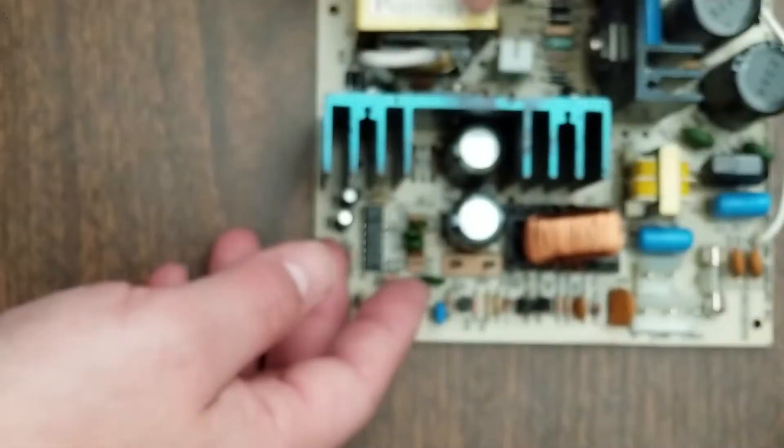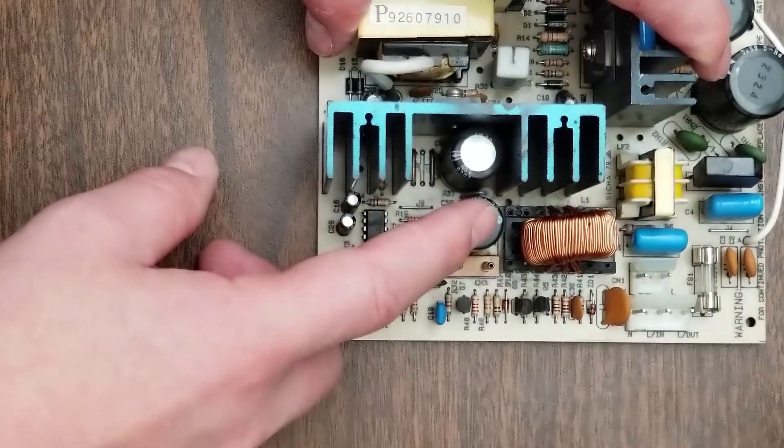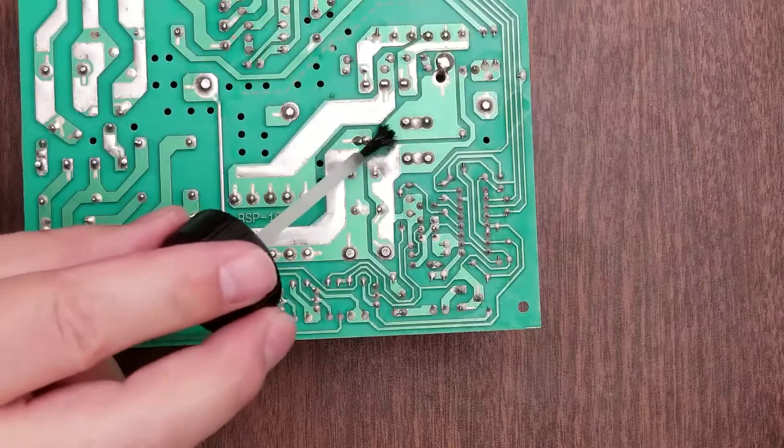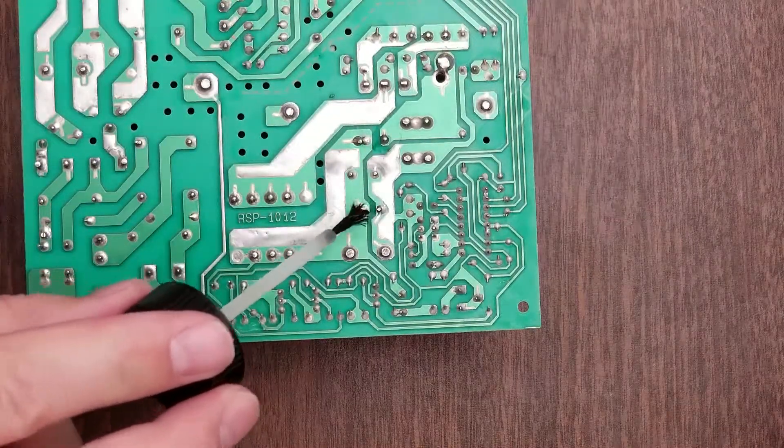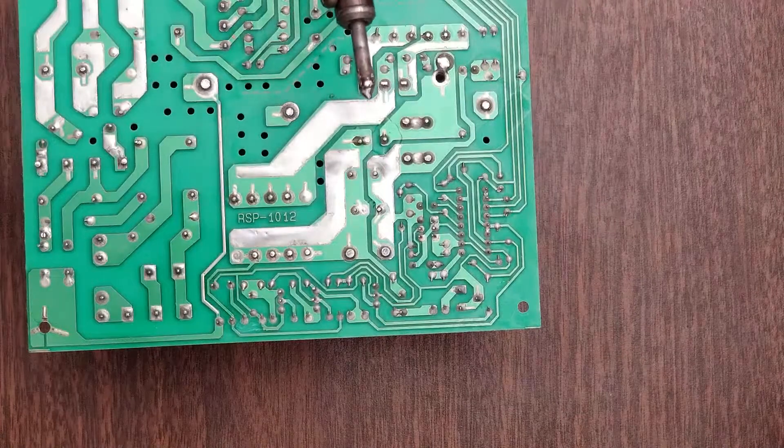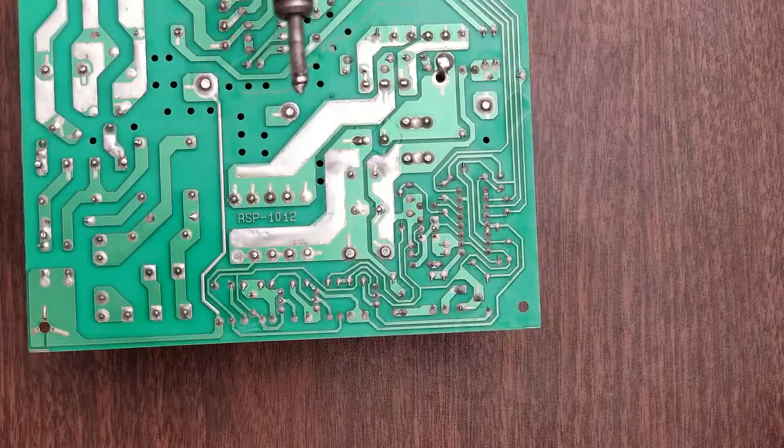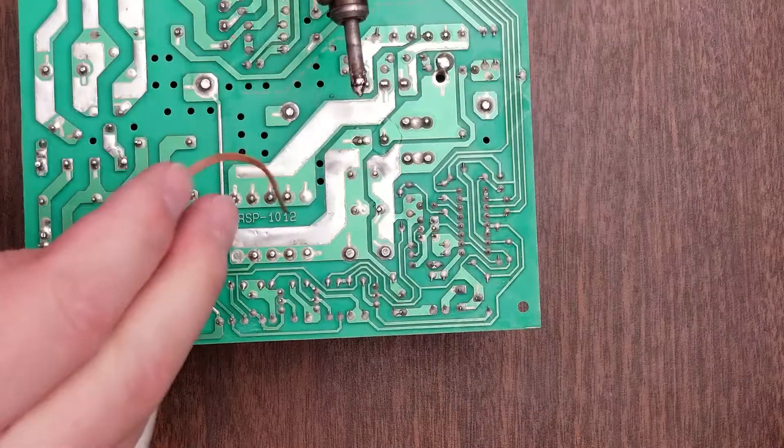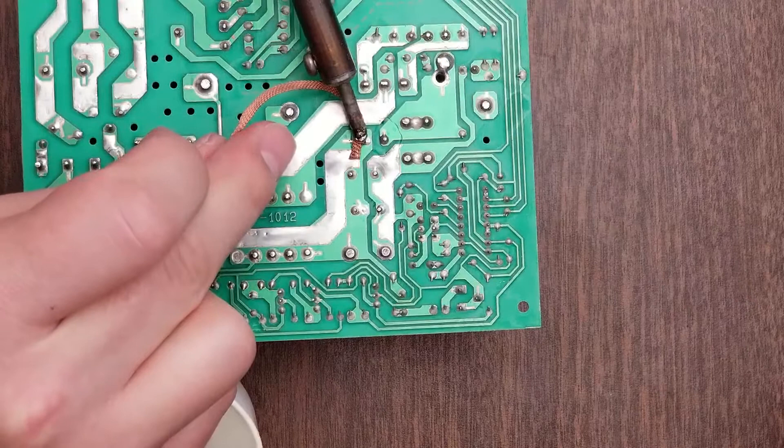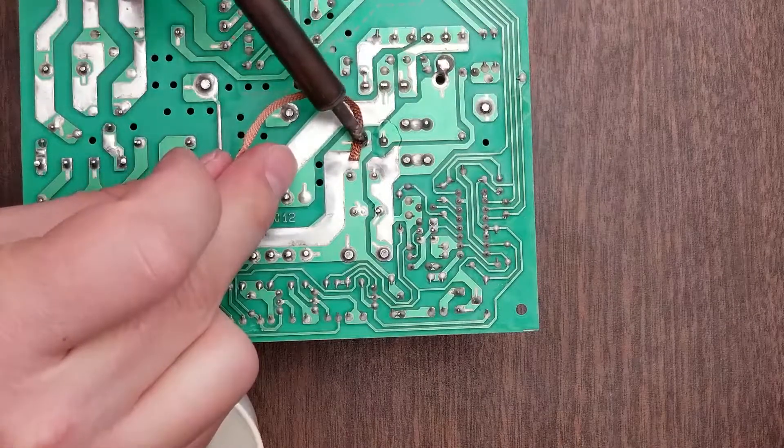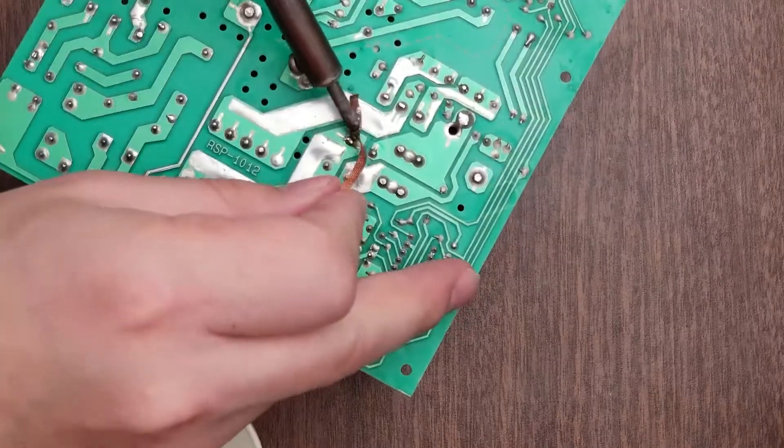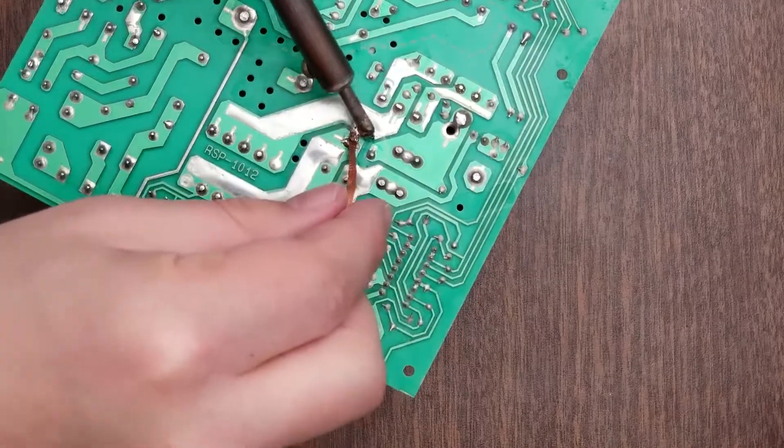We'll get those two caps desoldered and I'll show you the new ones that I have. Alright, so I'm going to apply some flux to the spots on the board where we want to desolder. Alright, we should be just about ready. The ventilation is on, and here's the desoldering. I wish I had those fancy desoldering tools with vacuum assistance.